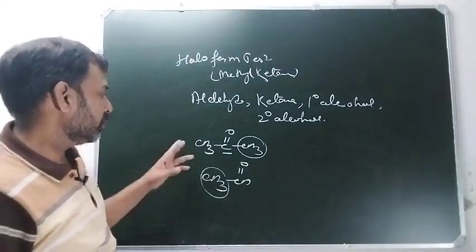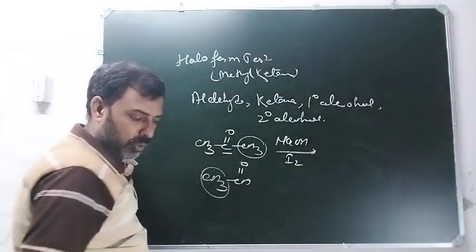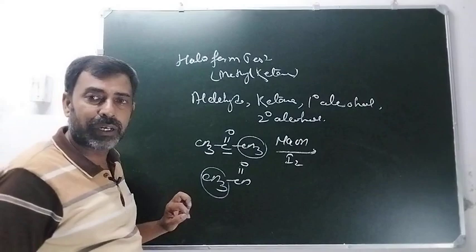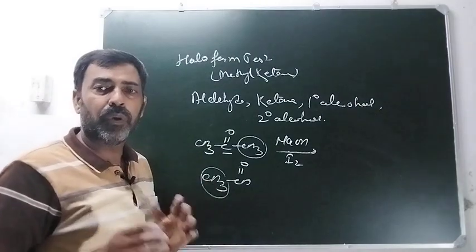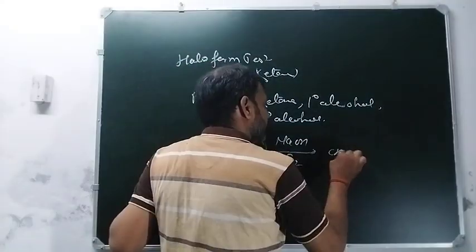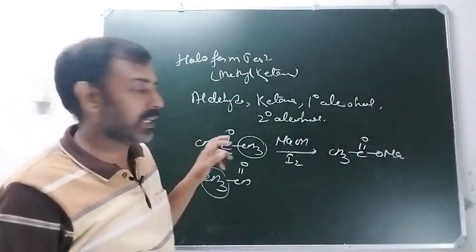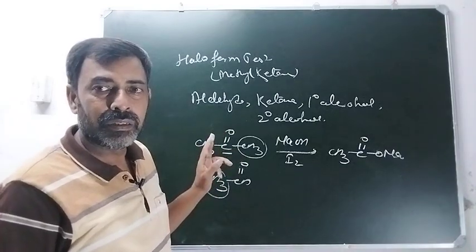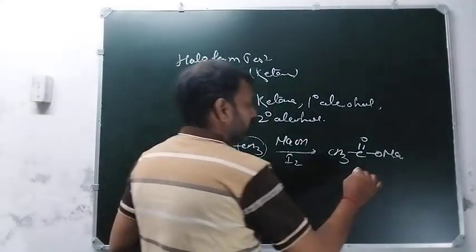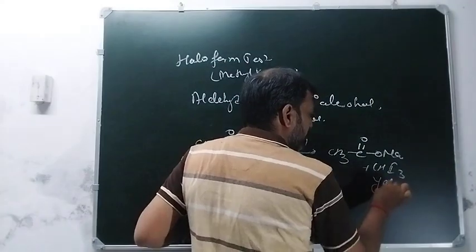जब हम इसे treat करते हैं NaOH and I2 से - इसी को books में NaOI (sodium hypoiodide) लिख देते हैं। तो यहाँ पे जब sodium hypoiodide से यह treat होता है तो क्या बनता है: CH3COONa (actually oxidation होता है, carboxylic acid बनता है carbon bond टूटता है, लेकिन बनने वाला compound acid ना बनके salt बनता है क्योंकि basic medium में reaction चल रहा है) और साथ में बनता है CHI3 - iodoform, जो कि yellow color का होता है।